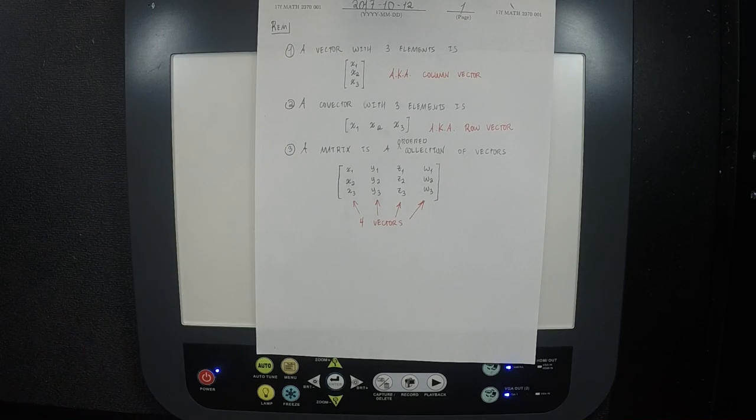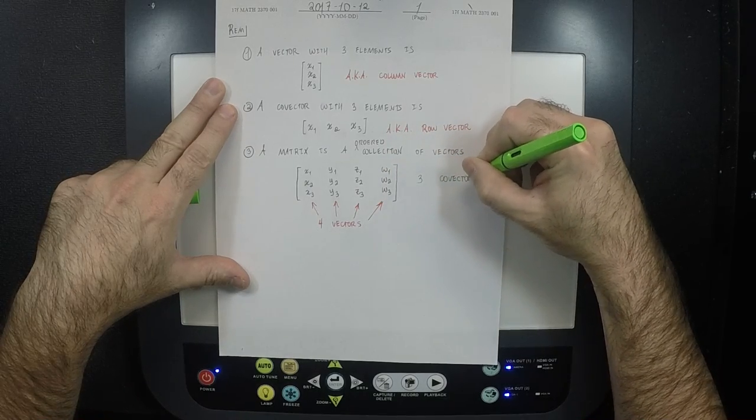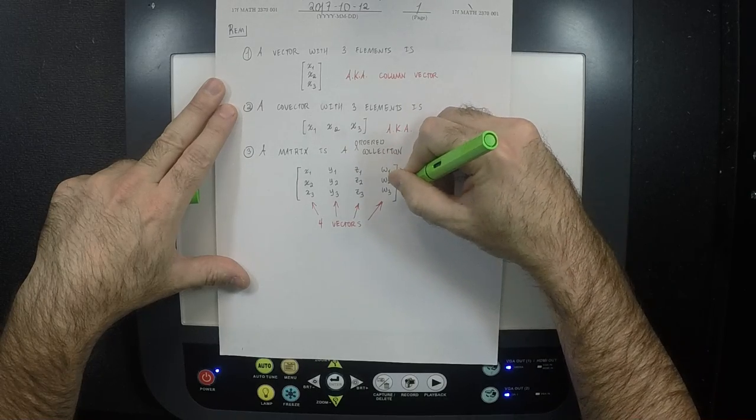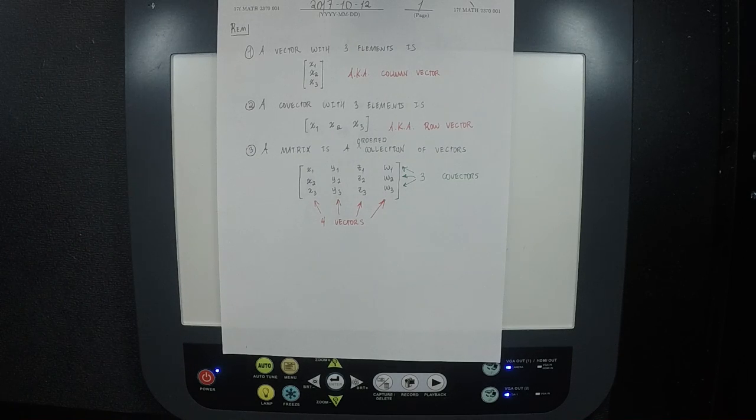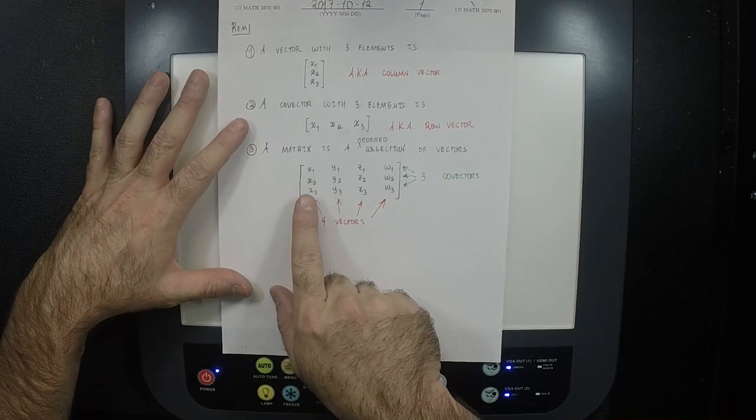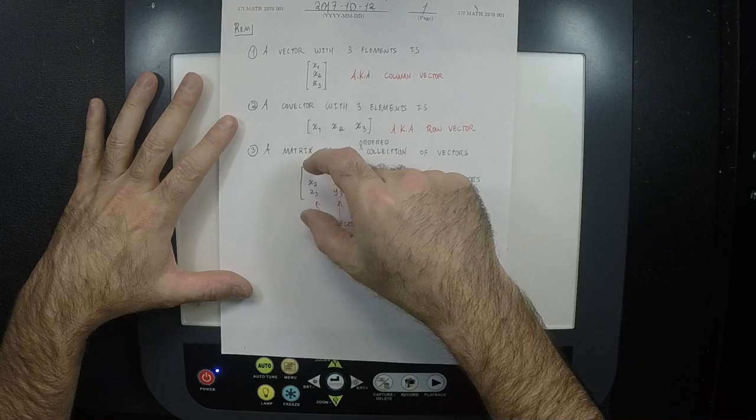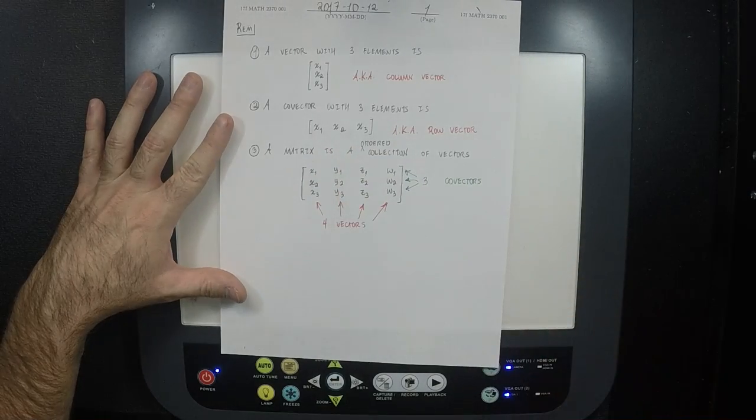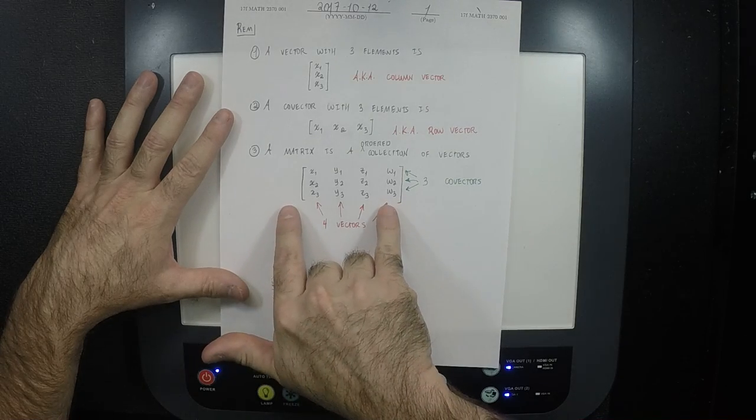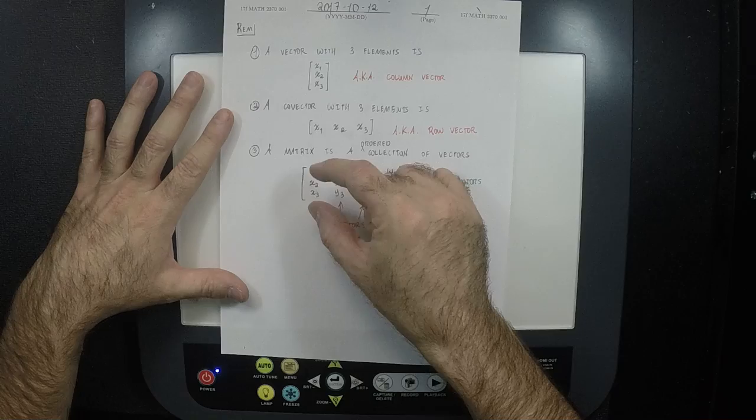But if you wanted, you could also view it as a collection of covectors. How many covectors is it? Three. Three covectors. So you can view this either as four vectors or three covectors. Now, for something to be a matrix, all of the vectors must have the same number of elements. That is to say, notice that all of these have three elements. This one has three, that one has three, that one has three, that one has three. It's not permissible for you to take one that has three, and one that has eight, and one that has two. You can't do it that way. They all have to be the same kind. Similarly, the covectors all have to be the same kind. So these are covectors of four elements. And these are vectors of three elements.